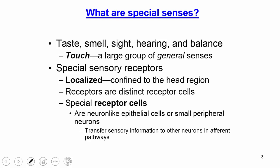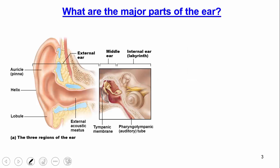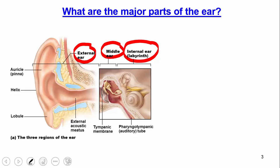Today we're going to talk about those of the ear. There are three main parts: the external ear, the middle ear, and then the internal ear, or the labyrinth. We can see the external ear, and we can see the middle ear to some degree using a light inside the ear, but we cannot really see the internal ear. The external and middle are visible to a certain degree, but the internal is something we're not able to see that well.